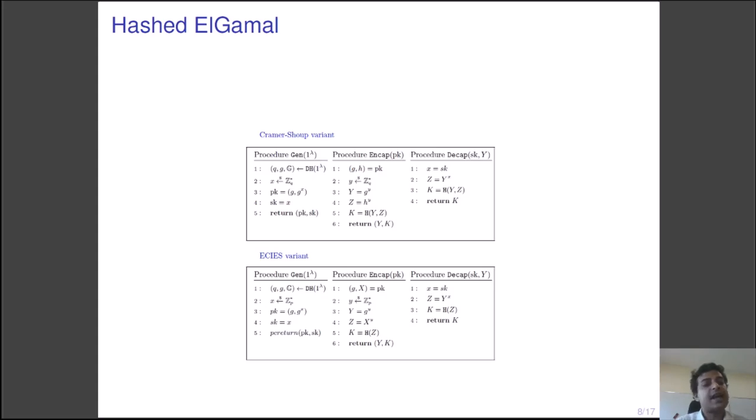In the ECIES version, everything except the key derivation is the same. The key derivation in ECIES, however, hashes only the Y to the power x, which is actually g to the power xy, instead of hashing both g to the power y and g to the power xy. As we shall see, this seemingly small difference makes a huge impact.